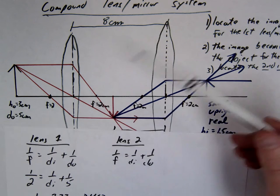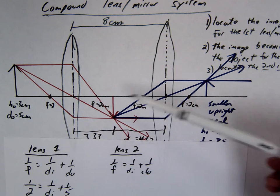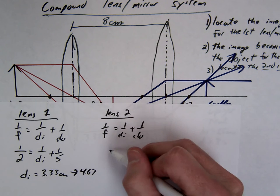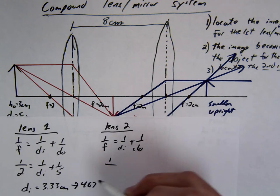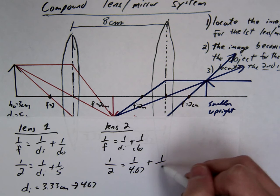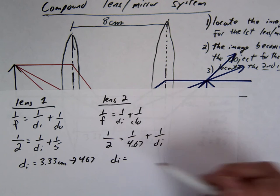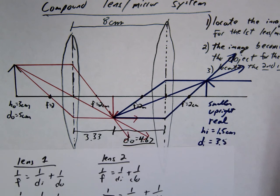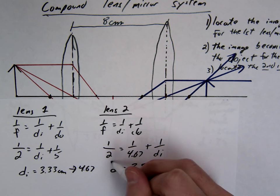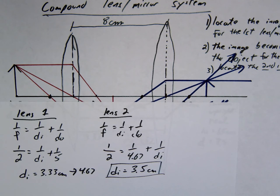Here this becomes 4.67. So be careful with that. Even when they don't ask you to draw it, I would encourage you to at least sketch kind of what's going on. That way you can see it better and you're not sure. Do I add? Do I subtract? Okay, let's do it. So 1 over, what was our F? 2 equals 1 over, we're going to use the 4.67 plus 1 over our new DI. What's our new DI? Hopefully it's close to, what did I get, 3.5? Is it exactly 3.5? Yeah. That's nice. Okay, that's our image distance.